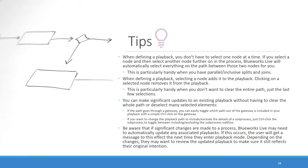There are a few tips for power users that can save you a lot of time. When defining a playback, you don't have to select one node at a time — if you select a node and then select another node further on in the process, BlueWorks Live will automatically select everything on the path between those two nodes. Also, remember that clicking on an already-selected node removes it from the playback, which is really handy when you want to undo just the last few selections without clearing the whole path.